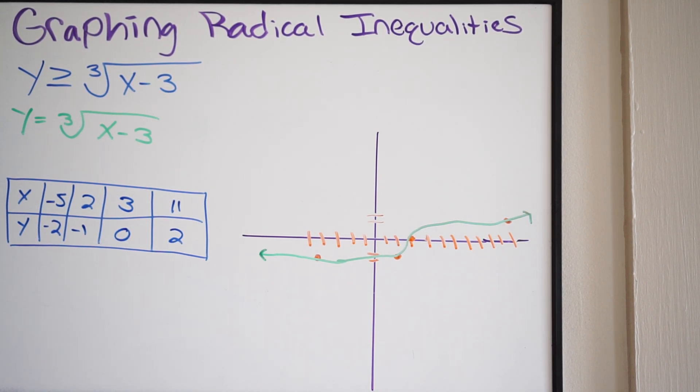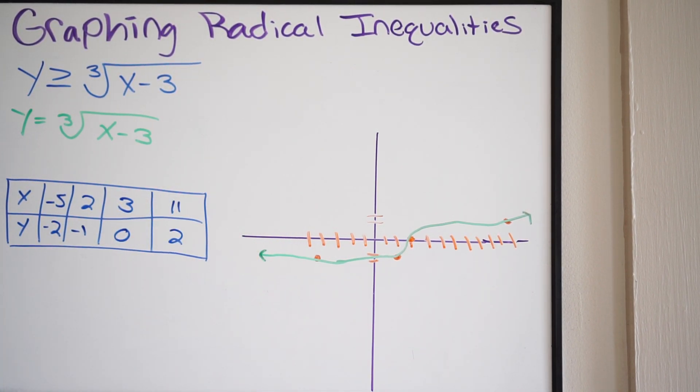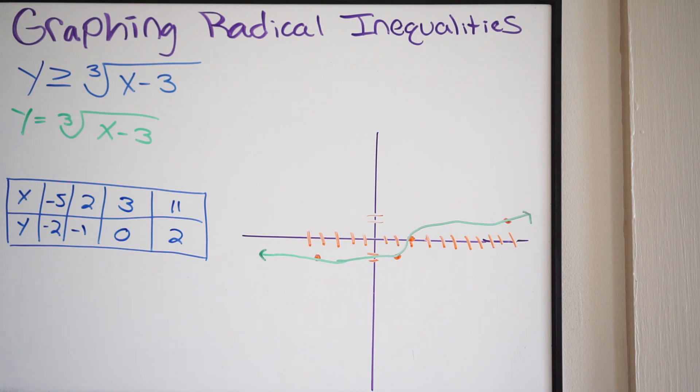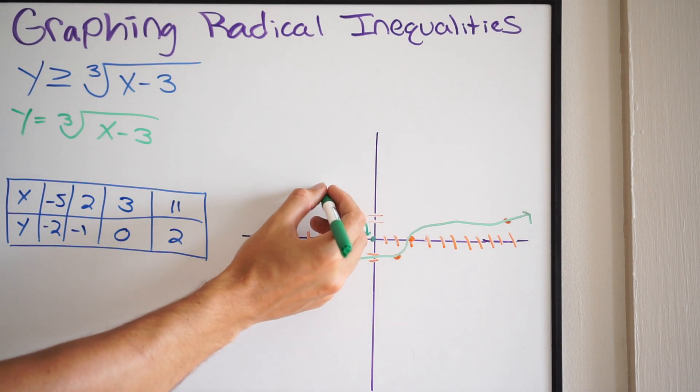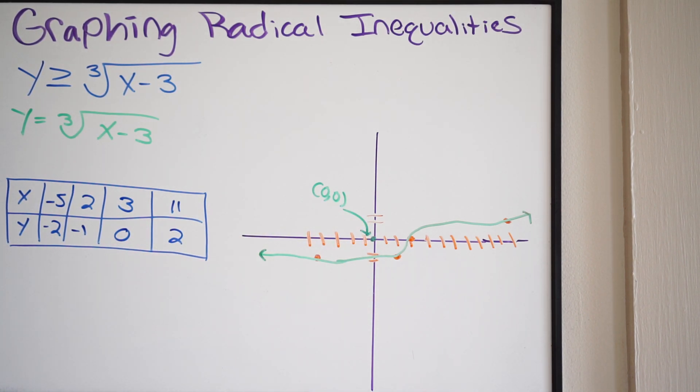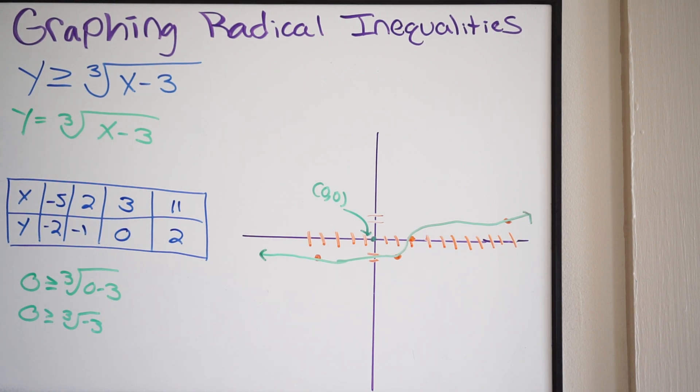Now we have the following. So at this point, we just want to pick a point, either below or above this, to see where we need the shade. We're dealing with an inequality. So again, it doesn't matter where you pick. This is as long as it's below or above the line. So I'm going to go ahead and pick the following. Let's just pick 0, 0. That seems like an easy point to pick. So we'll pick 0, 0. And we want to test this to see what happens. So let's plug in a 0 in for Y. And then we'll have the cube root of 0, 0, minus 3. And then we'll get 0 is greater than the cube root of, this will just be negative 3.